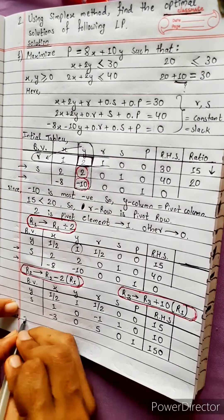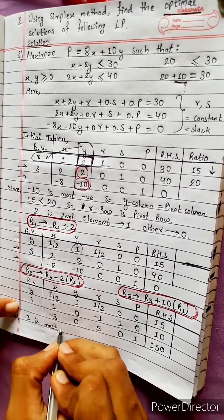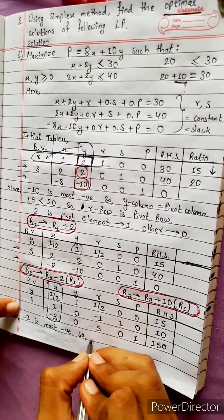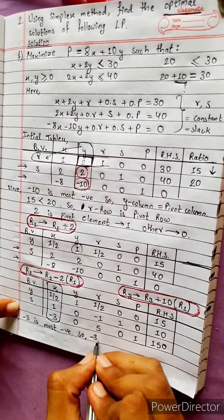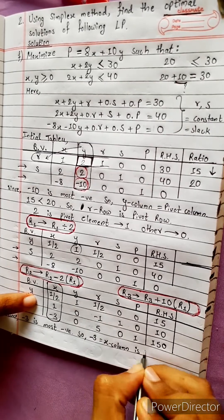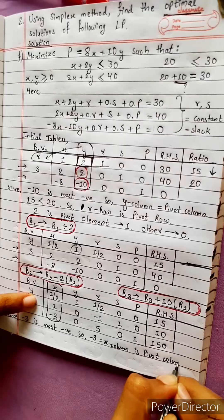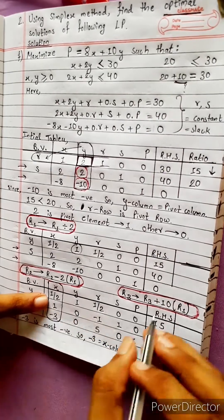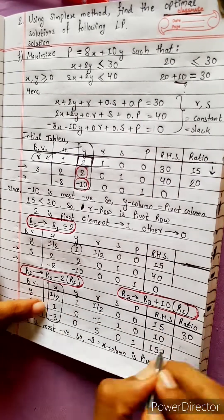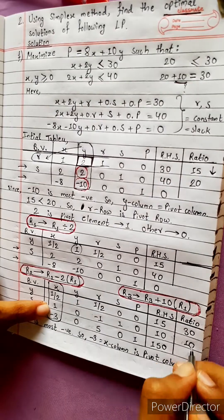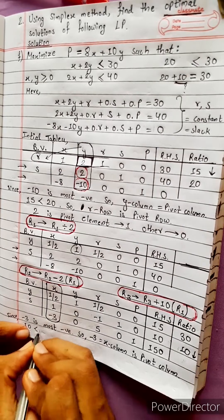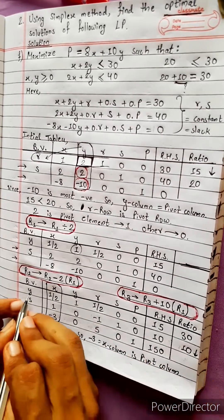Since minus 3 is the most negative, minus 3 is the new pivot column. For the ratio test: 10 divided by 1 equals 10, which is less than 40. So 10 is the smaller ratio, making that the pivot row.